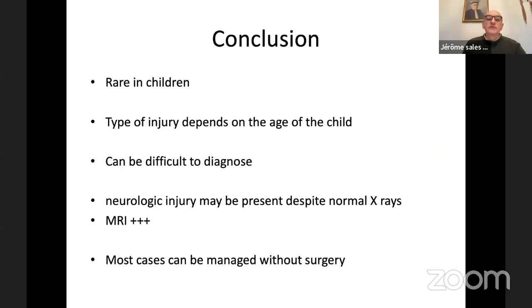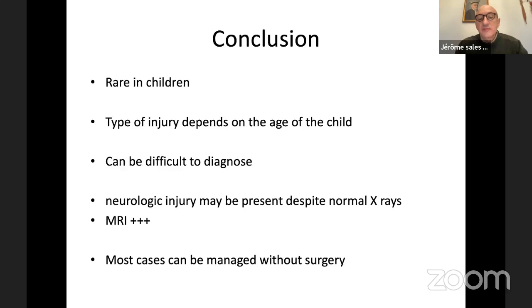To conclude: fortunately, spinal injuries are rare in children. The type of injury depends on the age of the child, and it can be difficult to diagnose due to the ossification status of the spine in younger children. Remember that neurologic injury may be present despite normal x-rays — in that case, do an MRI if you can. Most cases can be managed without surgery, with orthopedic reduction, Minerva, and plaster of Paris cast. Thank you very much, and I can answer any questions.